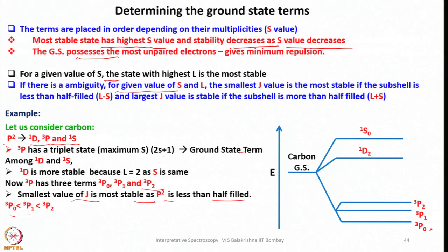For the P2 system, the possible terms are 1D, 3P, and 1S. The term 3P has the highest spin multiplicity (triplet), so it is the ground state. Between 1D and 1S, both are singlets but D has a larger L value, so 1D is lower in energy than 1S. The 3P term itself splits into 3P0, 3P1, and 3P2. Since P2 is less than half-filled, J equals L minus S; thus 3P0 is the most stable, least energetic state.